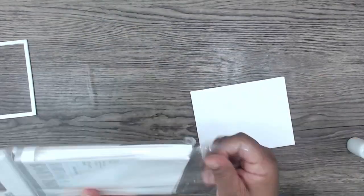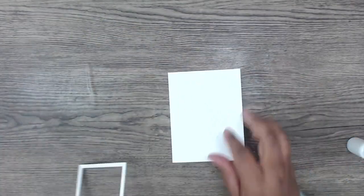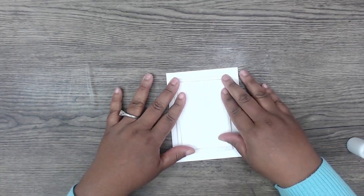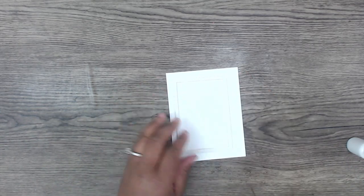Go ahead and grab your card base. I am using a smaller die than the card base. So I'm going to cut it down so I can add a quarter of an inch border around the entire card.